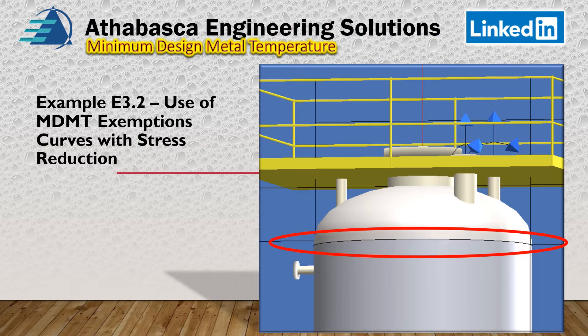Welcome back to our next example of an MDMT problem found in Division 1 in the PTB-4 manual. This is example E3.2, called the use of MDMT exemption curves with stress reduction. We look at the coincident ratio, which we talked about in earlier episodes, and I'll do an example problem with commentary based upon the standard ASME example.